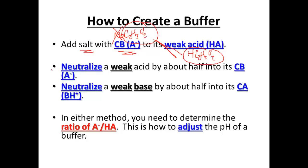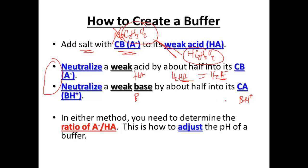Another way to make a buffer is to neutralize a weak acid about halfway. If you neutralize HA to about half of itself, half remains as HA and half turns into its conjugate base A-, so HA and A- are roughly equal — giving you a buffer. You can also do the opposite with a weak base B: neutralize it by half and it turns into its conjugate acid BH+. When you neutralize half of it, they're equal to each other, and you have a buffer.